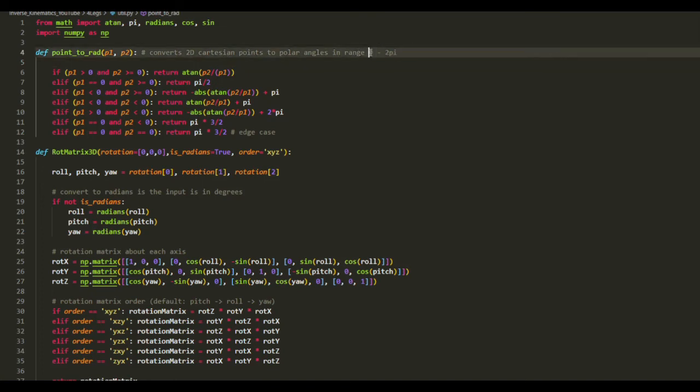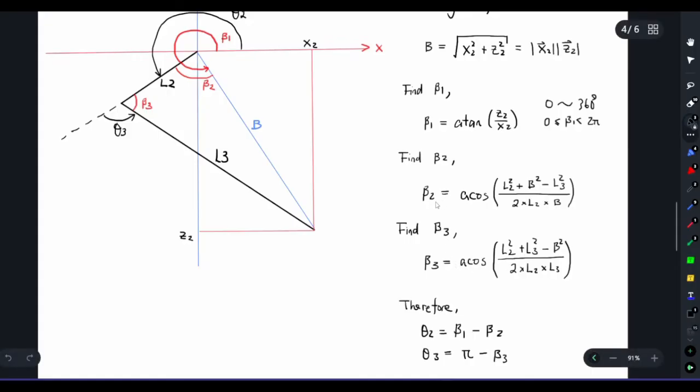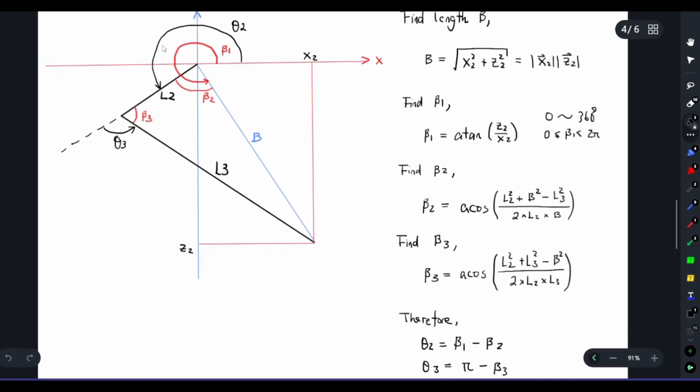We can then find beta 2 using the cosine rule and then use almost exactly the same method to calculate beta 3. From the diagram we can see that theta 2 is beta 1 minus beta 2, and also theta 3 is pi minus beta 3, so pi means just 180 degrees minus beta 3 equals theta 3.